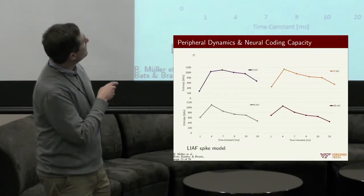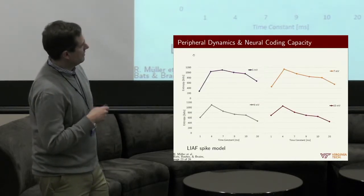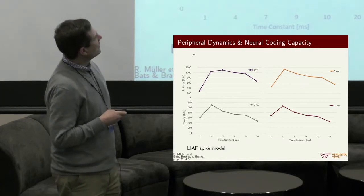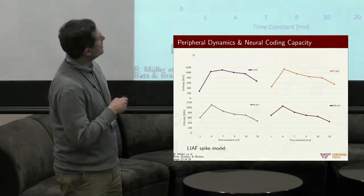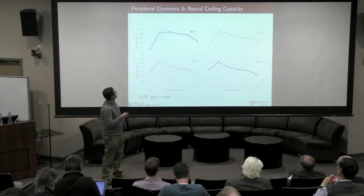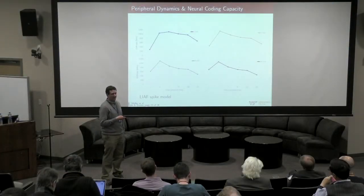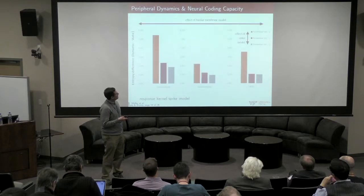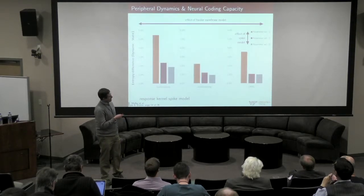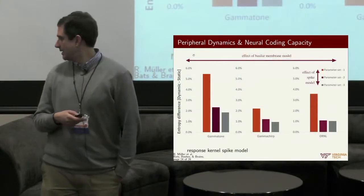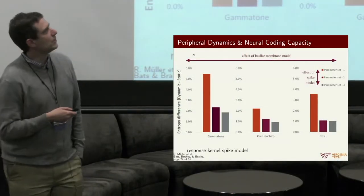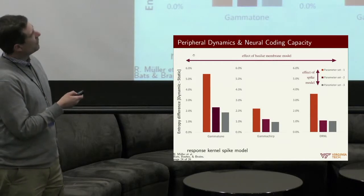Then we can play with the parameters here for the leaky integrate and fire model. And you can again see, if you vary the time constant, if you vary the firing threshold, you get different levels of entropy out of that for our input. And this all summarizes that both the basilar membrane model, the initial primary representation, and also the spike model both have effects.